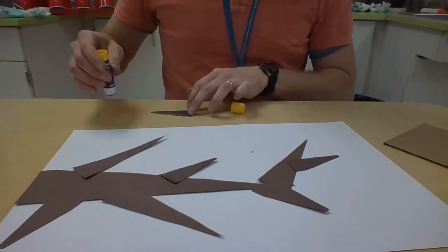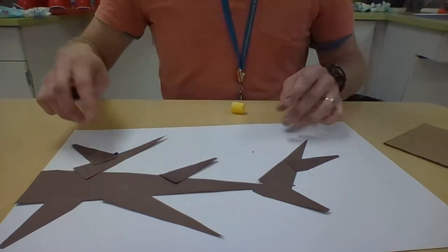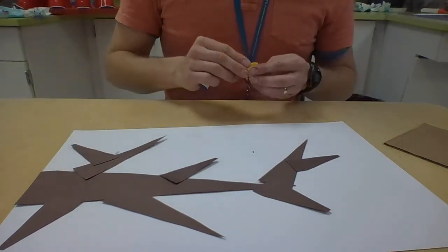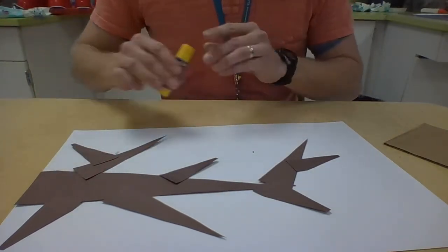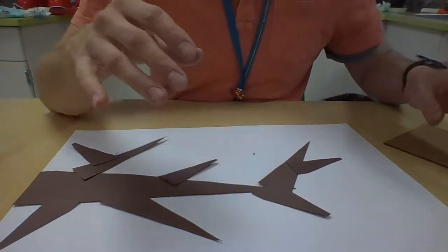We're using our brown papers to build our little tree branch. Once you've built that, you have a decision to make.